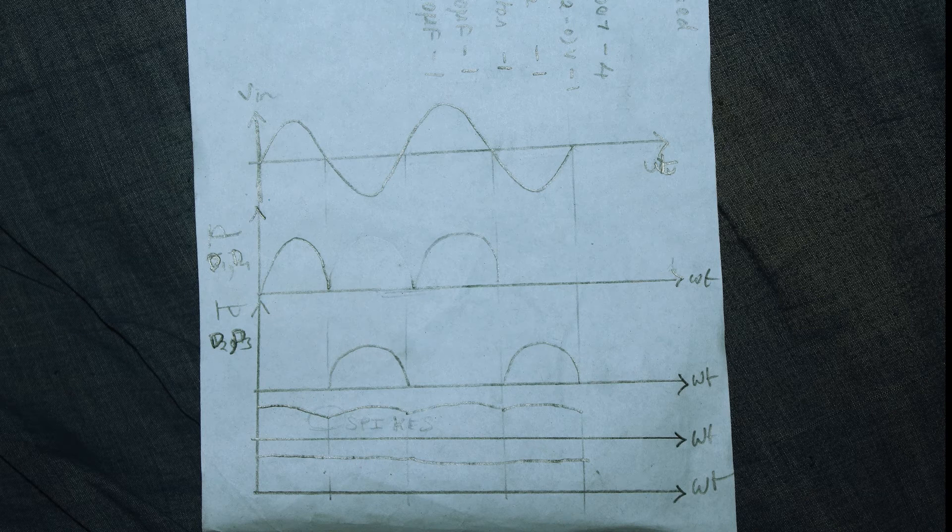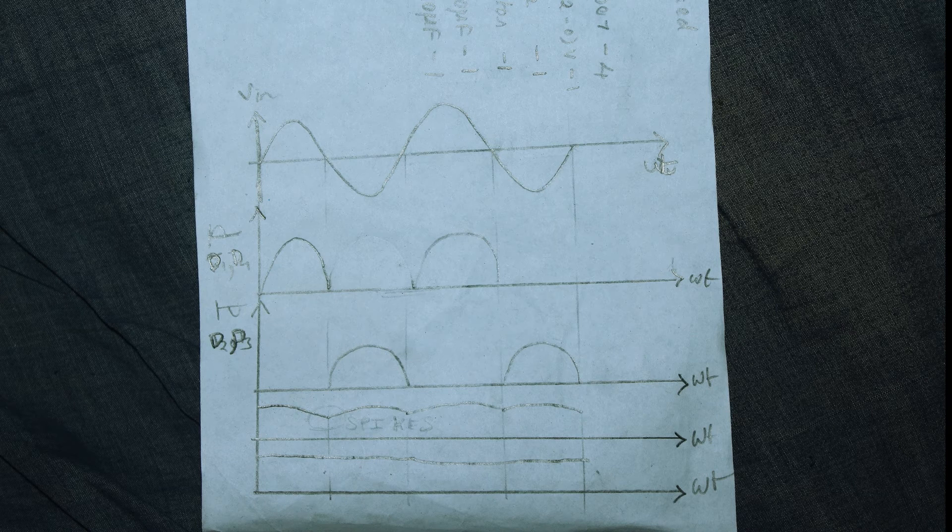During the positive half cycle, the diodes D1 and D4 will be forward biased, and the other two diodes D2 and D3 will be reverse biased. So the diodes D1 and D4 only conduct. So during the positive cycle you will get the output.